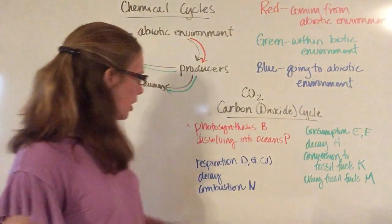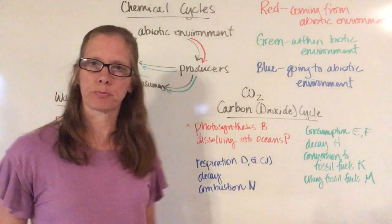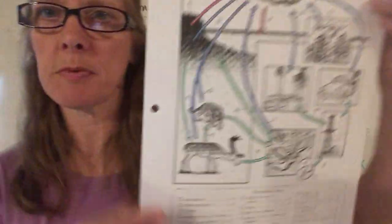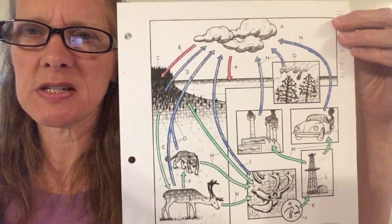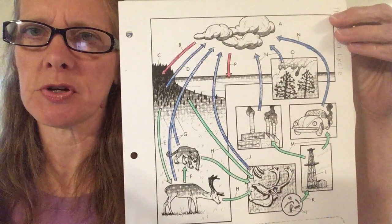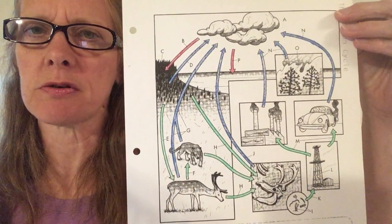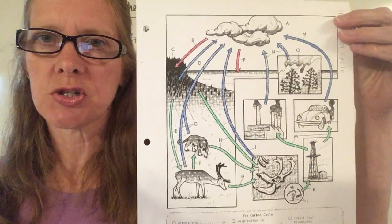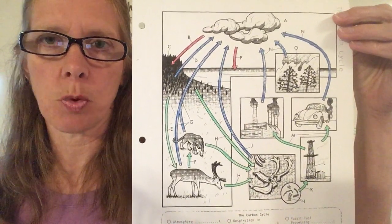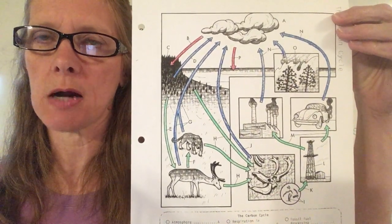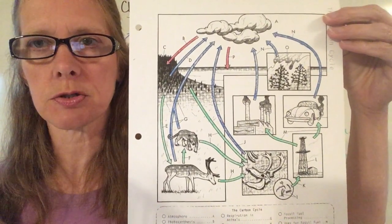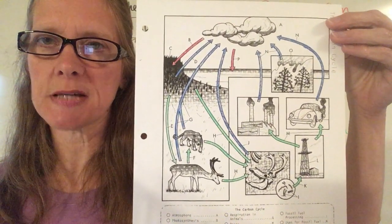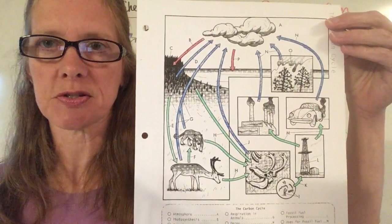Your finished diagram of the carbon cycle should show a number of green and blue arrows, some marked in two different places, so you can check your work and make sure you have the right arrows colored with the correct colors. In a couple of days we will pick up the other three cycles as well as the greenhouse effect.